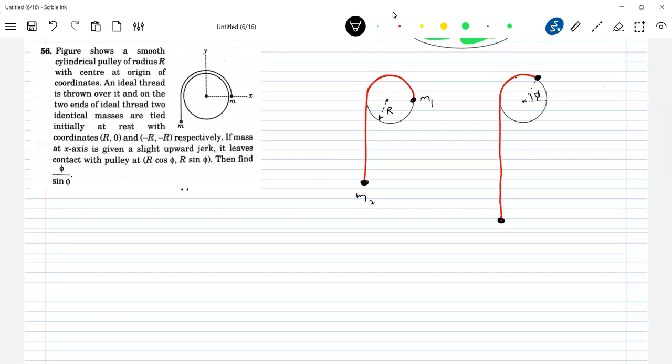What is the state of the bobs? Yes, they'll be moving. So they'll be having velocities. This will have velocity v. This will have velocity v.